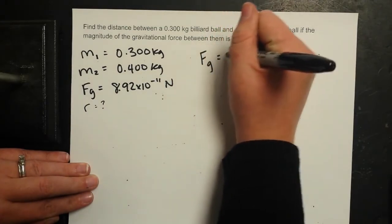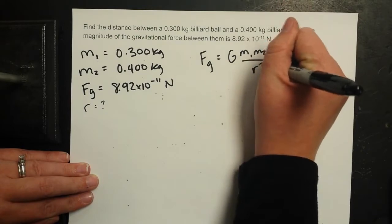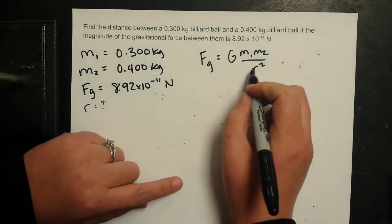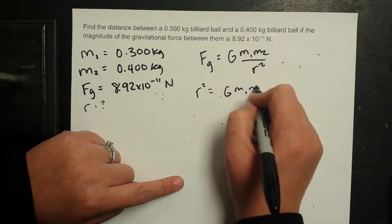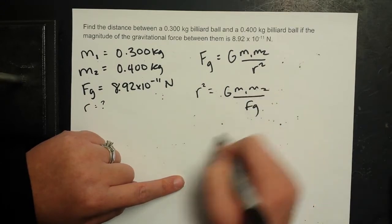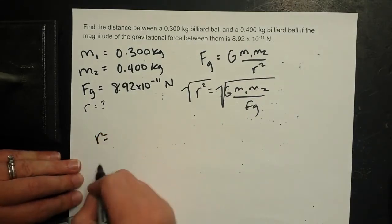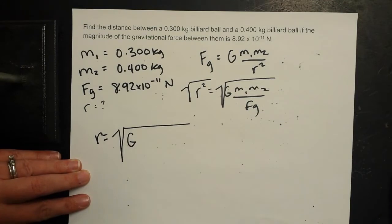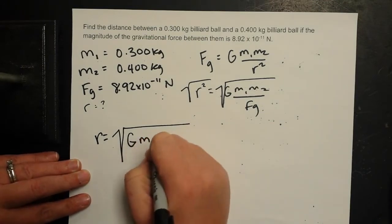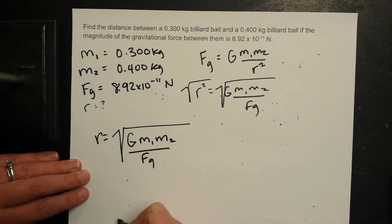So remember Fg is equal to big G M1 M2 over R squared. I can say that R squared then is big G M1 M2 over Fg and square root both sides. So now I get the distance is the square root of the constant of universal gravitation times the product of both masses all divided by gravitational force.